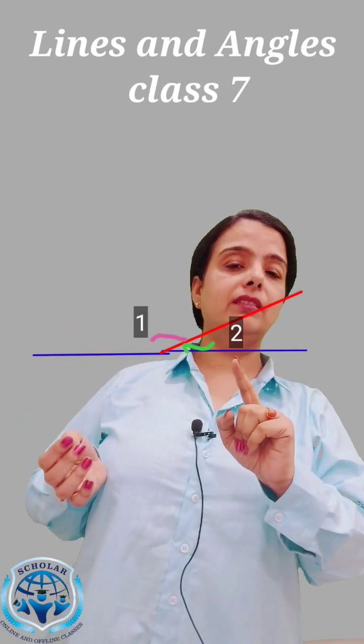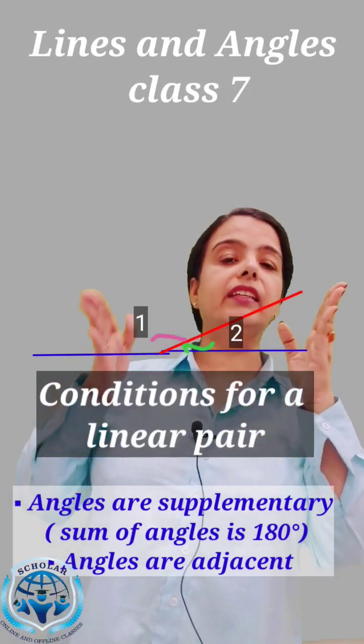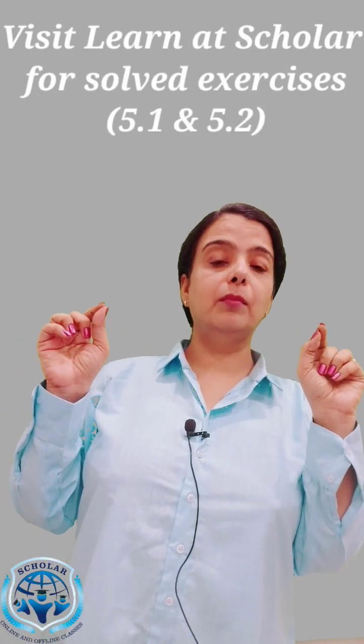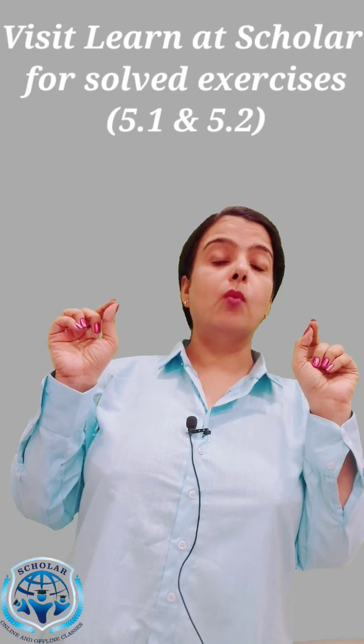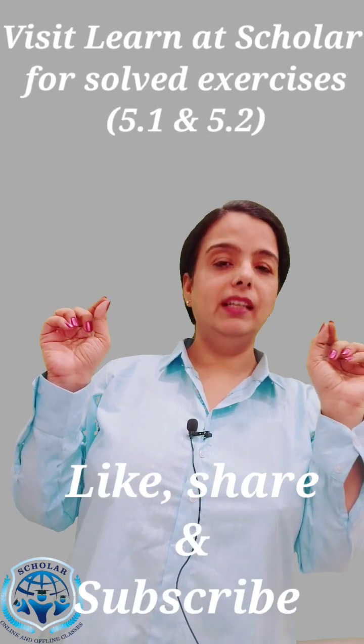You must remember that linear pairs are adjacent to each other and their sum is 180 degrees, that means they are supplementary. If one pair is supplementary, that is the sum of the two angles is 180 degrees and they are also adjacent to each other, they form a linear pair.